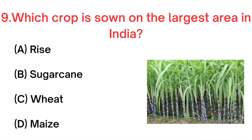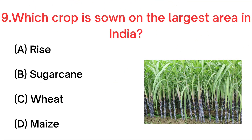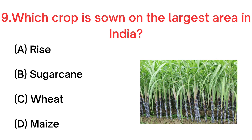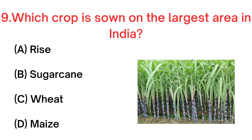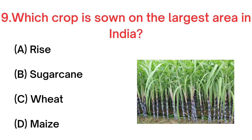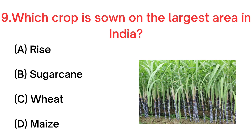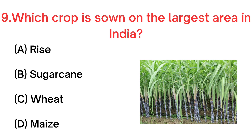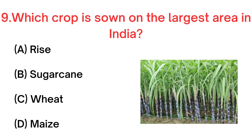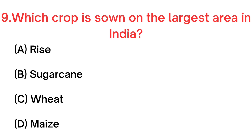Your next question. Which crop is sown on the largest area in India? A. Rice. B. Sugarcane. C. Wheat. D. Maize.